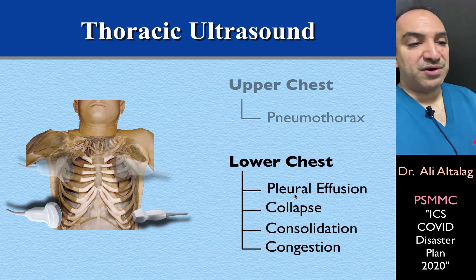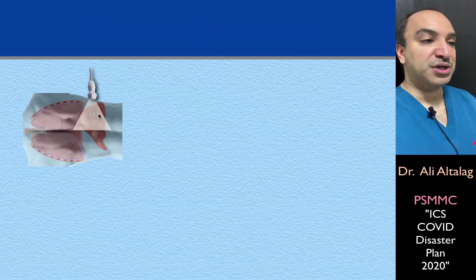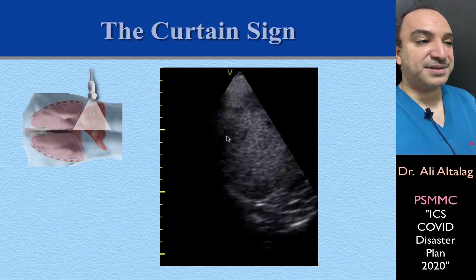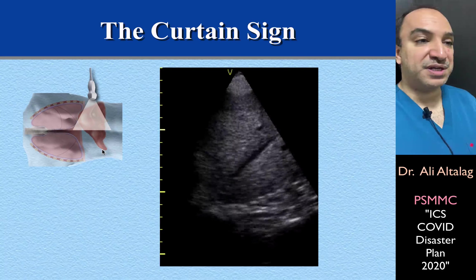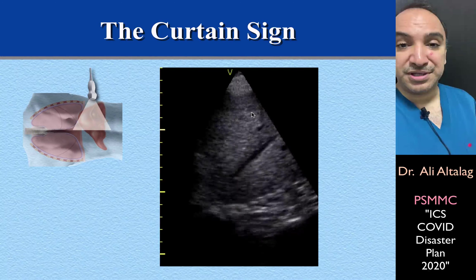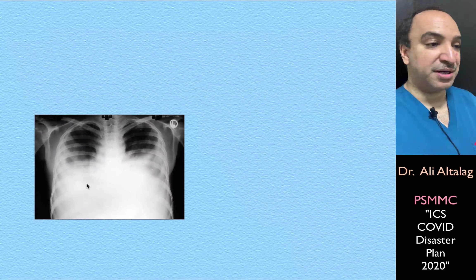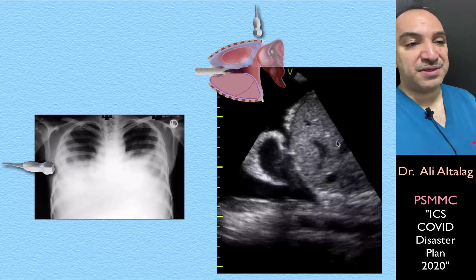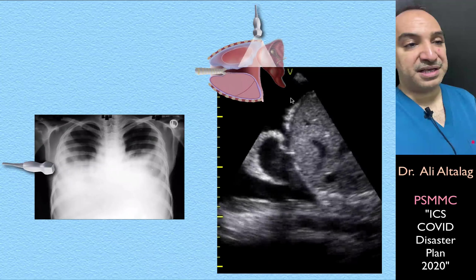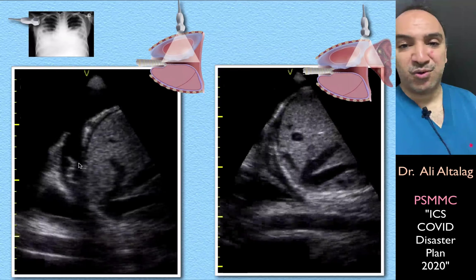For lower chest ultrasonography, looking for pleural effusion, collapse, consolidation, or congestion, we can use the curvilinear array transducer or the phased array transducer. In a normal subject, we demonstrate the curtain sign — air in the lung at the costophrenic angle that moves in and out of the way of the transducer, giving an air artifact. The presence of the curtain sign rules out pleural effusion at the costophrenic angle. In a patient with what appears to be bilateral pleural effusion, on the right side we see the liver, diaphragm, and fluid between the liver and diaphragm in the abdomen. There is no curtain sign — instead, there is pleural effusion and a collapsed right lower lobe.